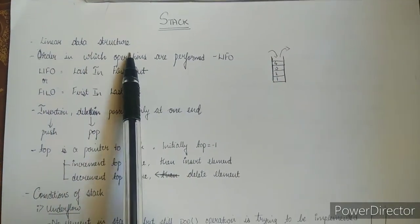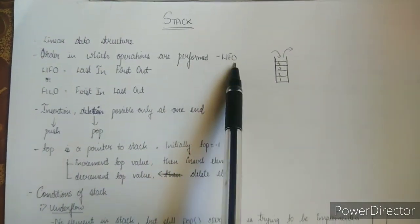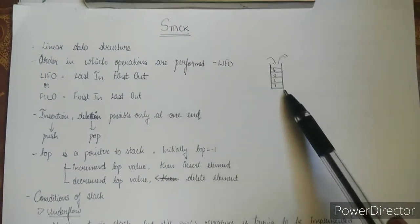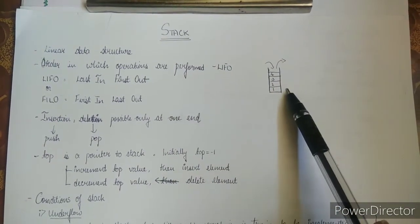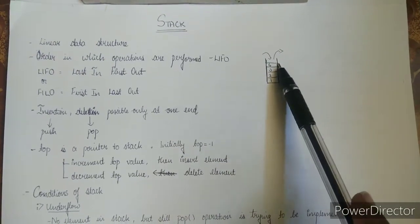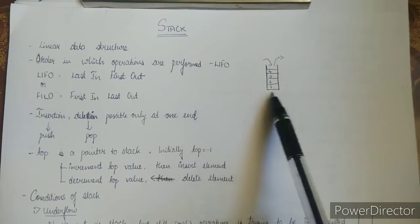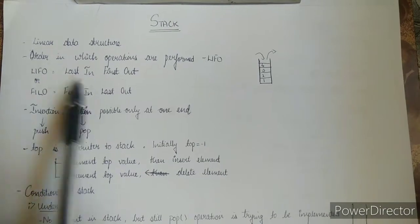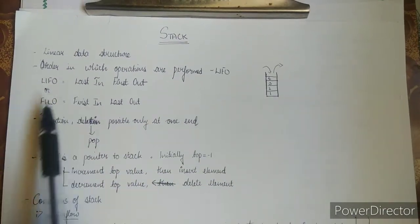Stack is a linear data structure. The order in which operations are performed can be called as LIFO or FILO. Visualize a stack as shown here — elements inserted end up at positions 1, 2, 3, and 4. The last element inserted into the stack will be the first one to go out, or the element first inserted will be the last to go out. That is last in first out or first in last out, abbreviated as LIFO or FILO.